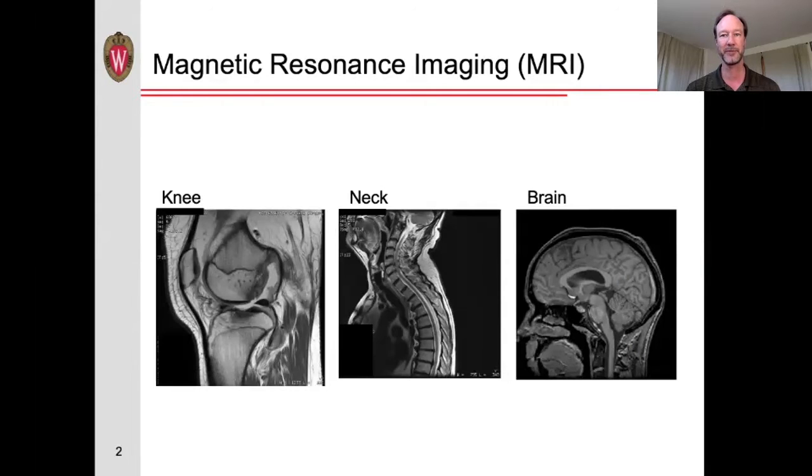MRI is an incredibly useful imaging technique, allowing us to see details of various parts of the body. It's particularly good at showing us the details about soft tissues within the body, such as the muscles and ligaments, the spinal cords and discs in the neck, and the brain. So how does an MRI create pictures like this?